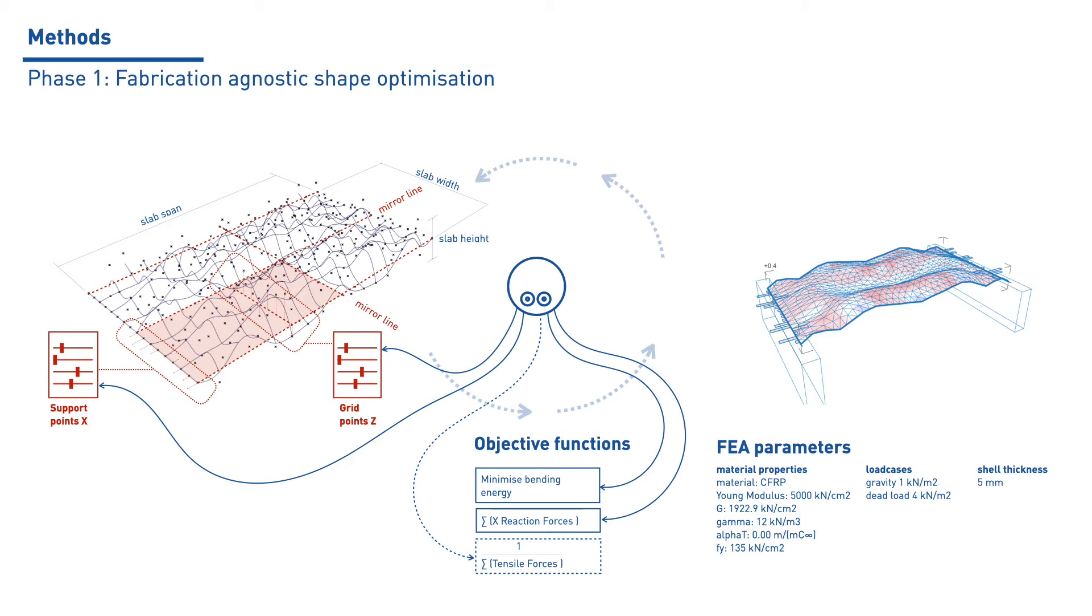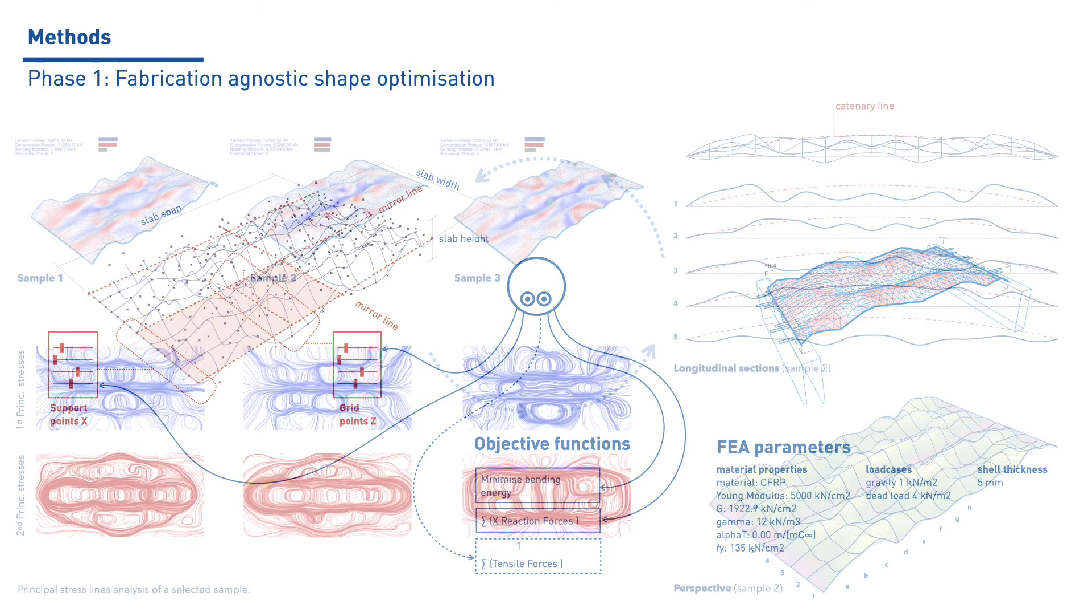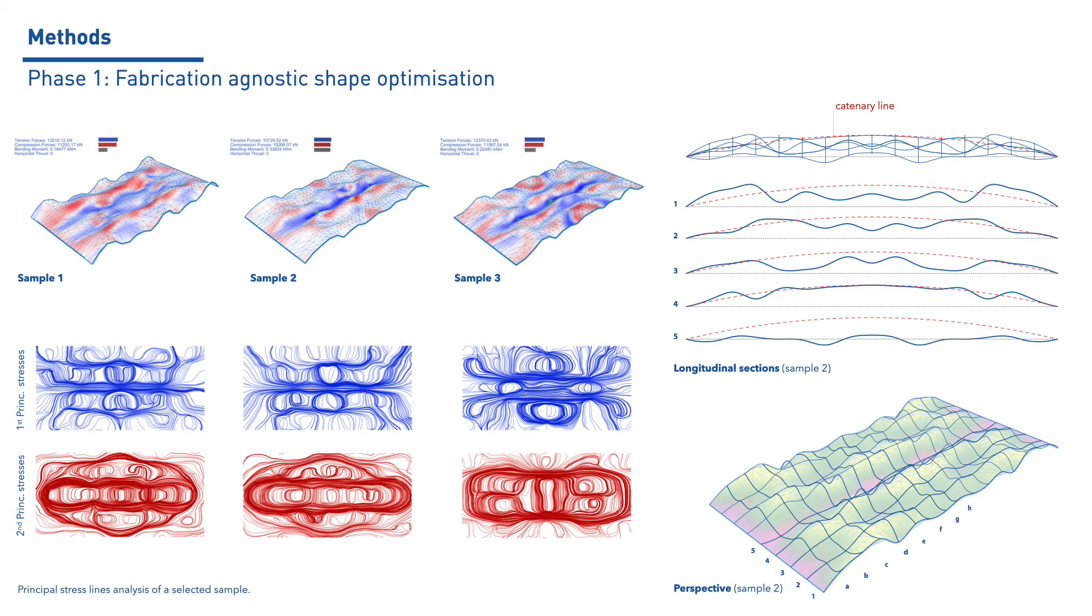The objective function is set to minimize the bending energy, maximize the use of the shell in tension, and minimize the horizontal support reaction. This shell is defined as a 5mm isotropic CFRP surface, loaded with a self-weight and 4 kN per square meter. Two support conditions are tested, one with hinge supports, and one simply supported.